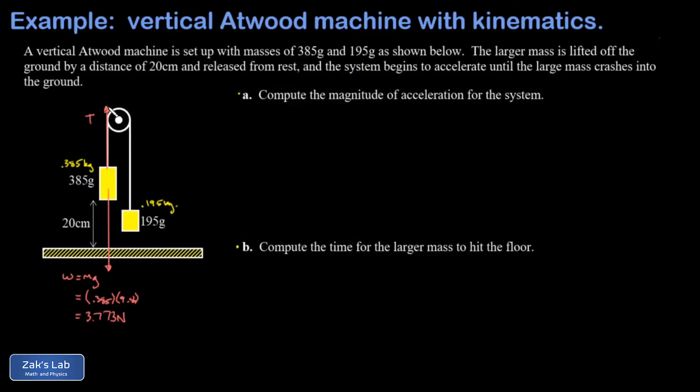That same tension is felt by the smaller block, provided the pulley is light and frictionless. Then the last force vector here is the weight of that smaller block, and I'm trying to show that a little bit shorter than the tension because I know the small block accelerates upward. We do the same calculation of mg for that smaller block and that weight vector has a magnitude of 1.911 newtons.